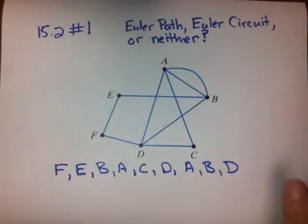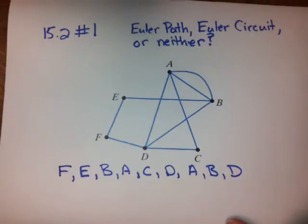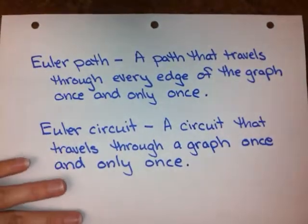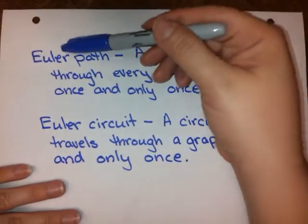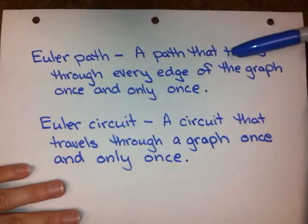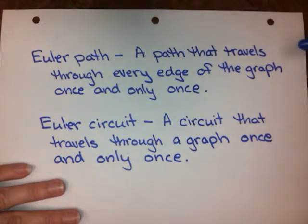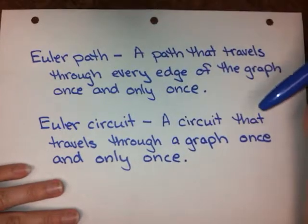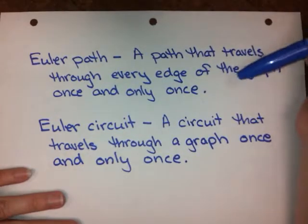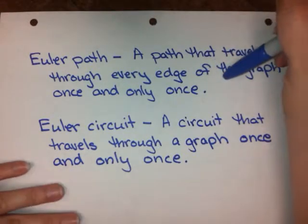What we need to do before anything else is remember what Euler paths and Euler circuits are. An Euler path is a path that travels through every edge of the graph once and only once. That means you can't retrace and you can't skip an edge — by the time you're done, it has to cover every single edge of the graph once and only once.